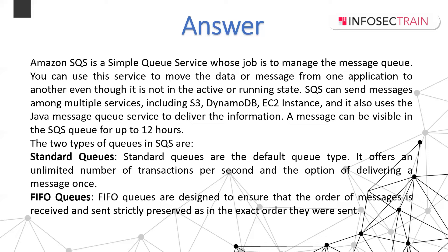FIFO queues are designed to ensure that the order in which messages are received and sent is strictly preserved in the exact order they were sent. An analogy is a restaurant meal order — starters come first, then main course, then sweets. Serving sweets first would be wrong. FIFO preserves exact order, but has a disadvantage: limited throughput with a limited number of transactions per second.